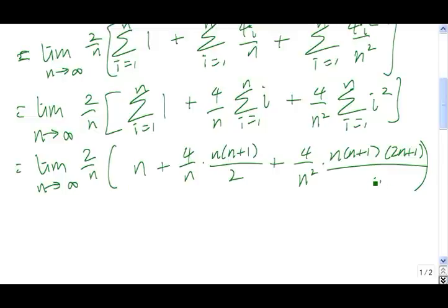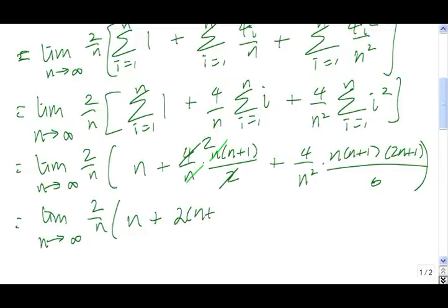So now we just clean this up a bit. We have n plus, here these n's cancel, so we have 4 times n plus 1 divided by 2. Actually, let me just go ahead and cancel the 4 and the 2. So this 2 goes away and takes 2 of that 4, so we're left with a 2 there. So here we have 2 times n plus 1. Here, this n goes away and it takes one of those with it. 2 goes into 4 2 times and it goes into 6 3 times. So we have 2 times n plus 1 times 2n plus 1 divided by 3n.